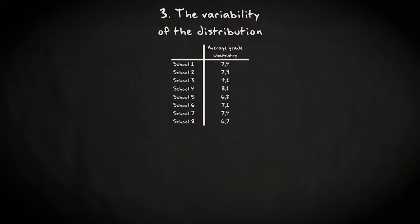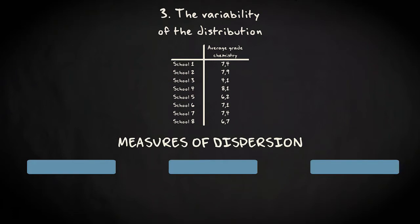Thirdly, we want to know how far the values of the distribution are spread out. We know three measures of dispersion. The first one is the range. The range is equal to the largest value minus the smallest value. That is 8.1 minus 4.1 equals four.